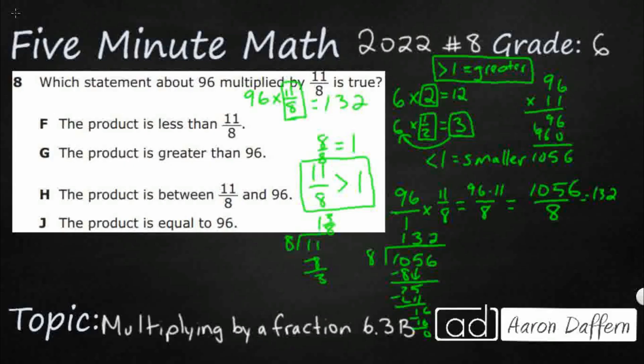It definitely is bigger because I multiplied by something that is greater than 1. 11-eighths is greater than 1. The product 132 is less than 11-eighths? No. Much greater. The product is greater than 96? Yep. The product is between 11-eighths and 96? Nope. Product is equal? No, it's 132. When you multiply by a factor greater than 1, your product is going to be greater than the first factor, G.